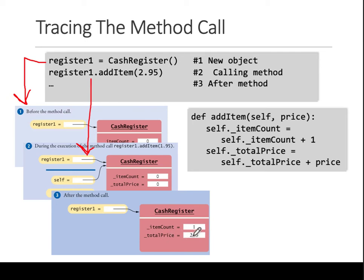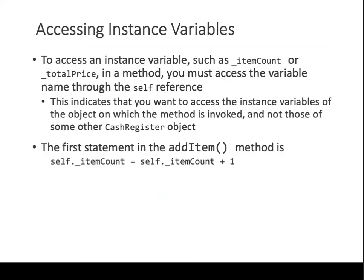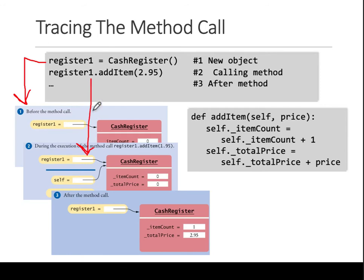To access instance variables, you should not do it from outside, like register1 dot totalPrice or underscore totalPrice. Do not do that. Always use functions to get or set values. Remember, get and set methods are there for a purpose: to hide these data variables. Do not call a variable with the object's name like object name dot variable - never do that.